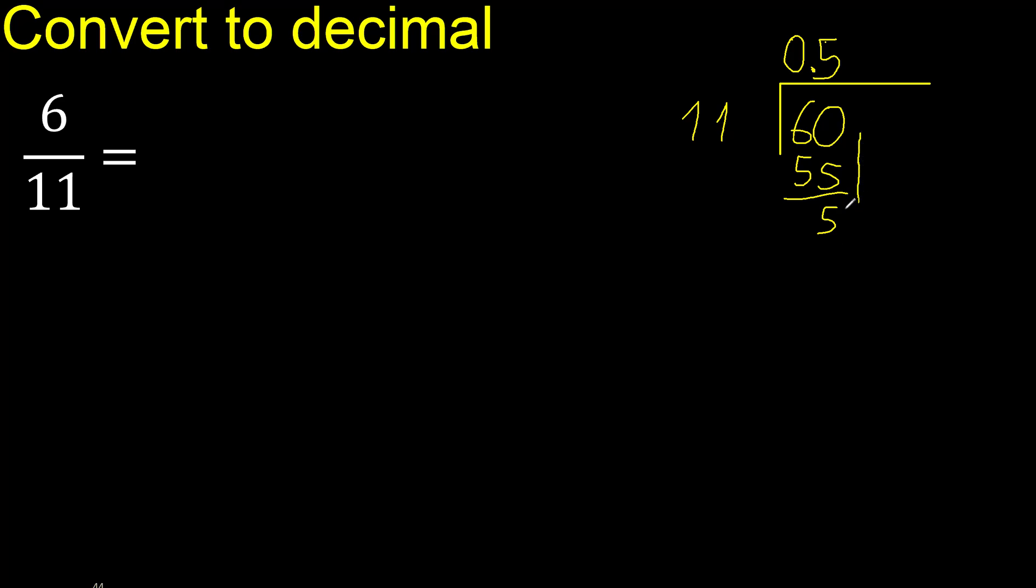Next, there is no number, therefore complete with 0. Point is here. 0 point 50. 11 multiplied by 4 is 44, not greater. 50 minus 44 is 6.